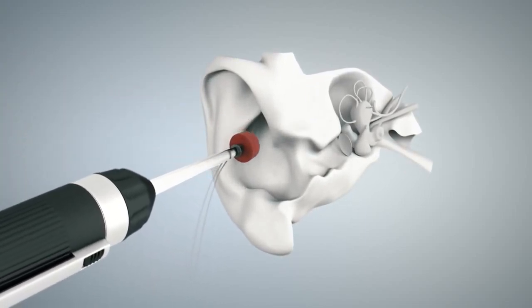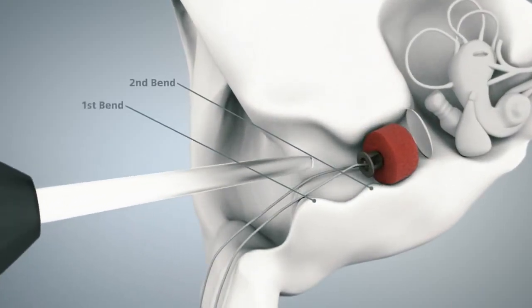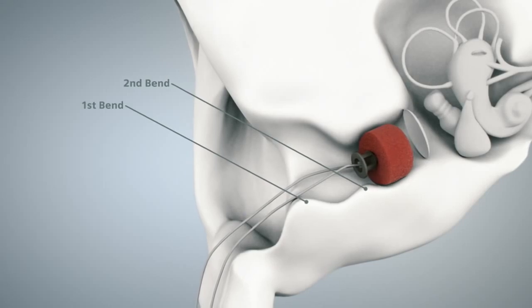Position the impression dome after the second bend, just as you would for any other CIC impression. Make sure the dome seals the ear canal and that the bullet is centered.